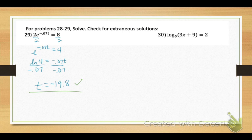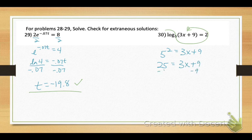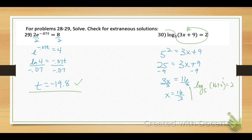Number 30: rewrite the logarithm as an exponential. So 5 squared equals 3x plus 9. Solve for x: 3x equals 16, so x equals 16/3. Check: log base 5 of (16/3 times 3 plus 9) equals log base 5 of 25, which equals 2. That checks.